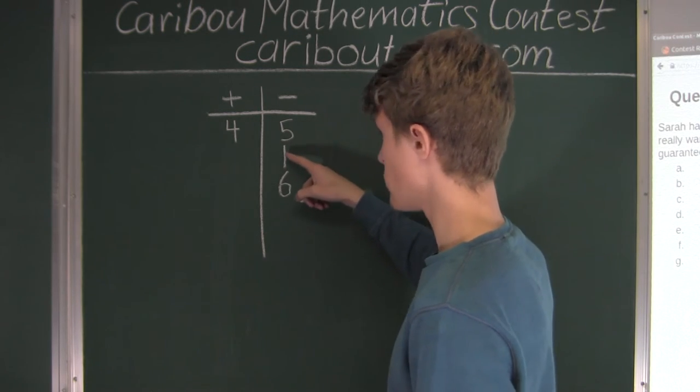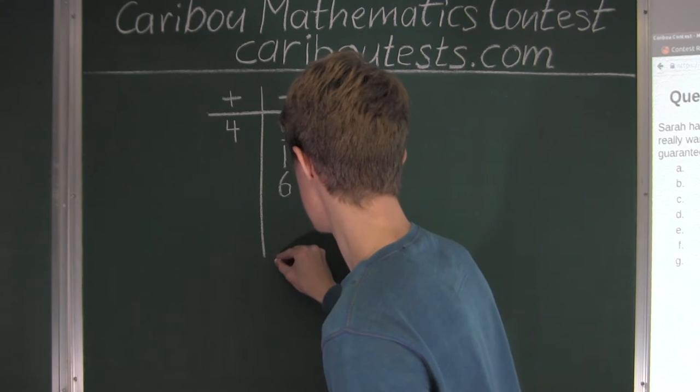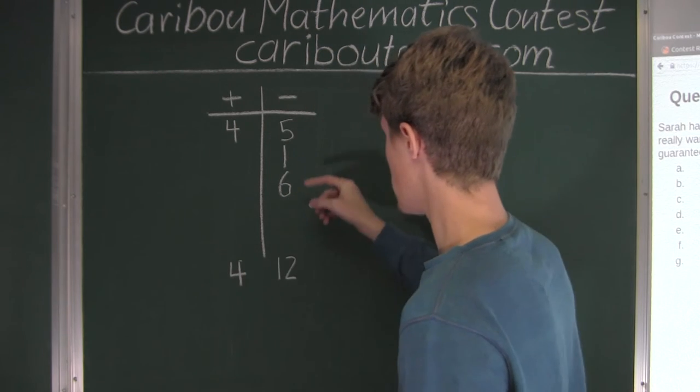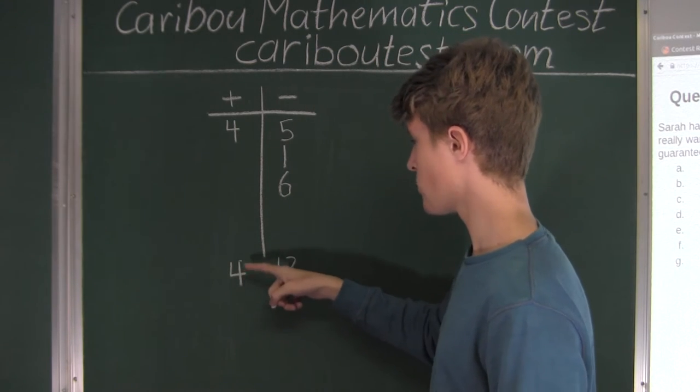We have 5 plus 1 is 6, plus 6 is 12, and here we have just 4. So 12 minus 4 is 8, which means that she is 8 below, 8 short of her intended average.